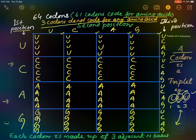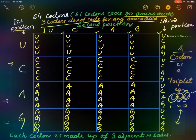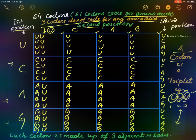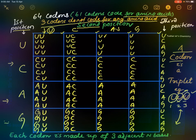Then we have to write the second position for these squares. The second position values are also U, C, A, G — and here we are writing them vertically. The second position is C and we write the letters vertically; here we write A vertically; and here we write G.